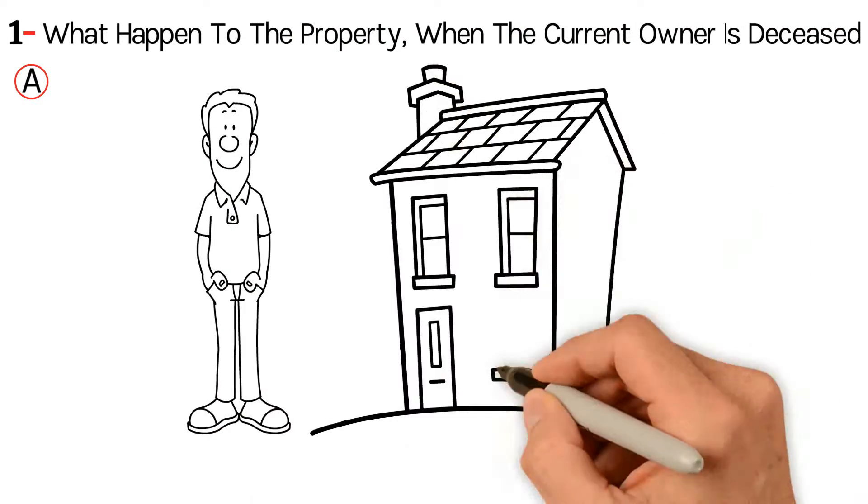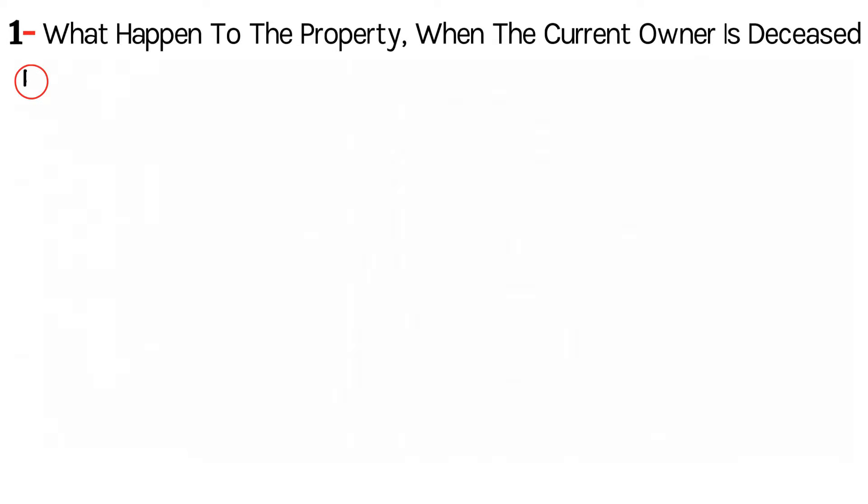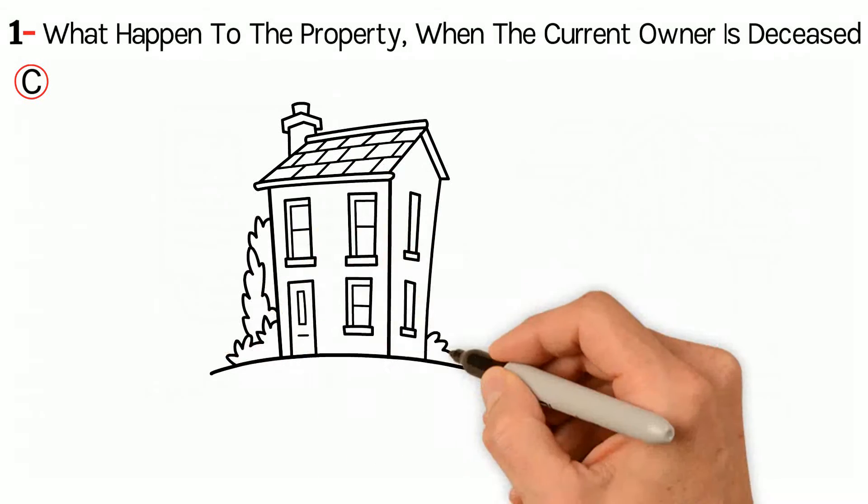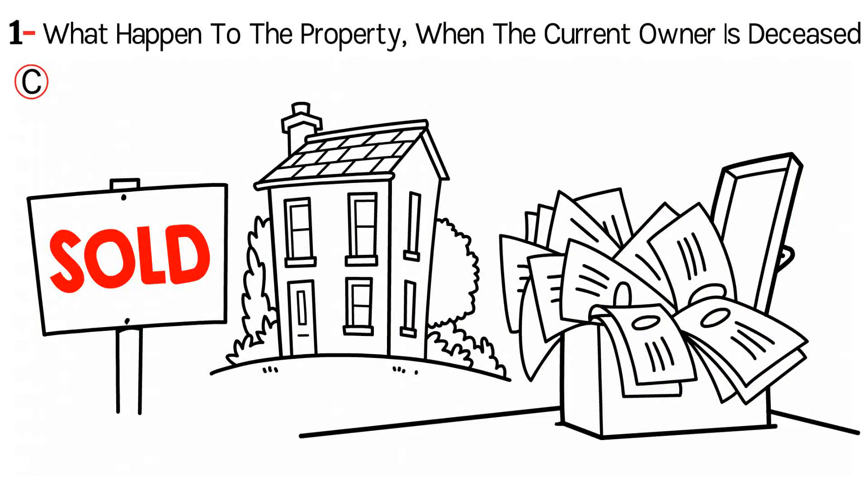The heir can take over the property and refinance it under their name. The bank can foreclose on the property and take it over. The heirs can sell the property and get the loan paid from the sale.